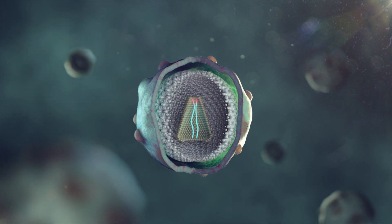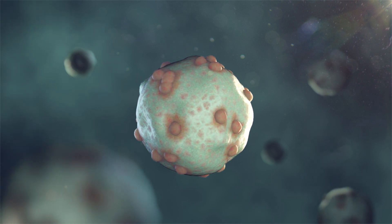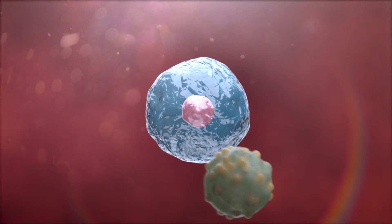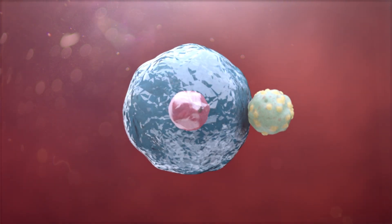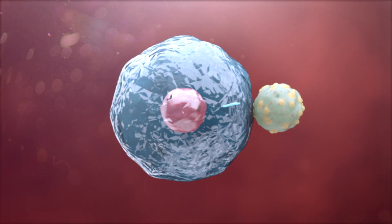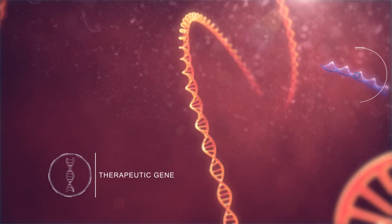The vector is obtained by a virus modified in the laboratory in such a way as to render it innocuous, but still capable of penetrating inside the host cells. Once the vector has entered the cell, it releases its own genome, which is then inserted into the host cell.